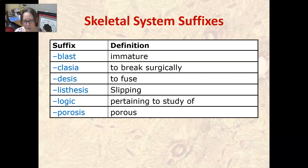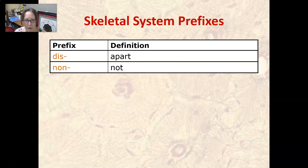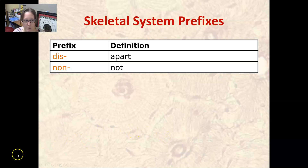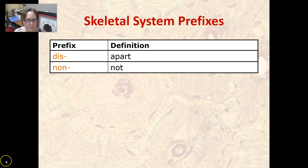We also have two prefixes: dis means apart, as in dislocation — the dislocation of a joint. Non means not, which is straightforward. That wraps up all the word parts for the skeletal system. In the next video, we'll cover signs and symptoms.